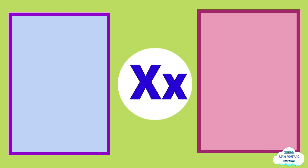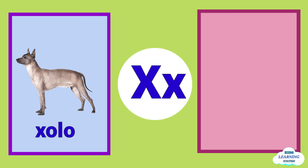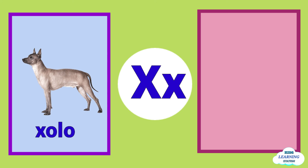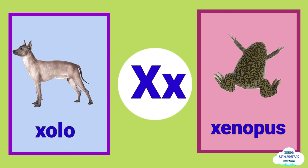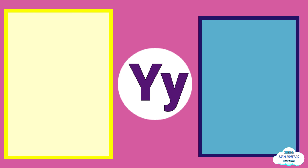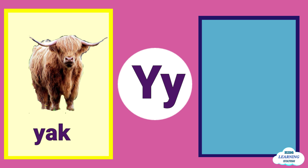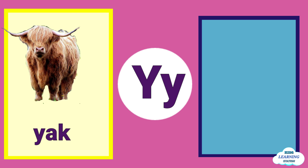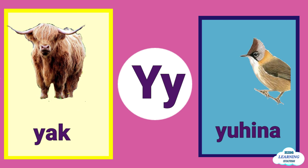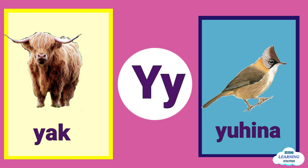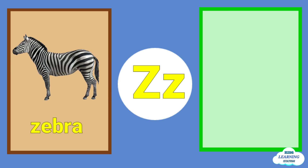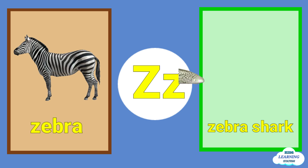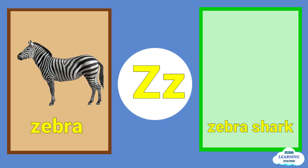X is for xolo. X is for xenopus. Y is for yak. Z is for zebra. Z is for zebrashark.